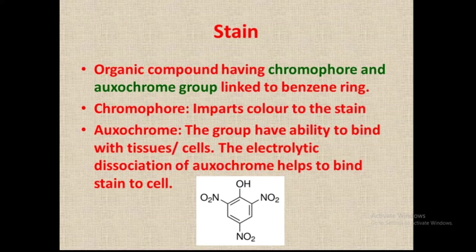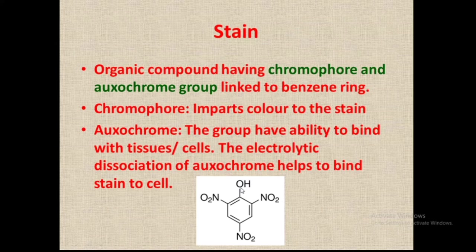For example, in picric acid, the central benzene ring is present. The chromophore groups are the nitro groups — three different NO2 groups — which are responsible for the yellow color of picric acid. The oxochrome group is the hydroxyl group, which is responsible for binding of picric acid to the cell. So three components are present in a stain: the benzene ring, chromophore, and oxochrome.